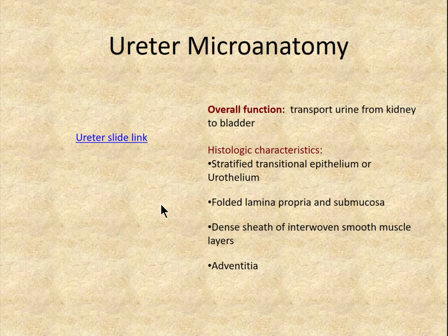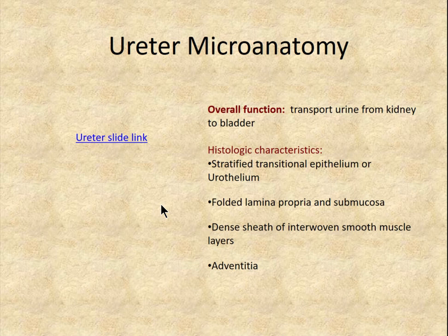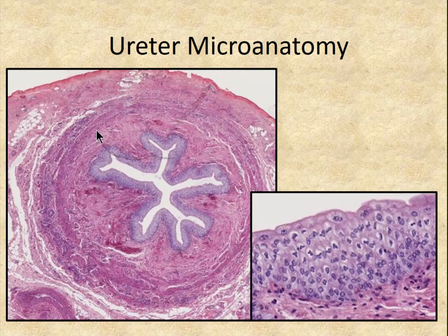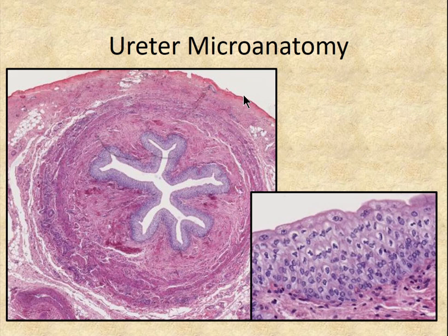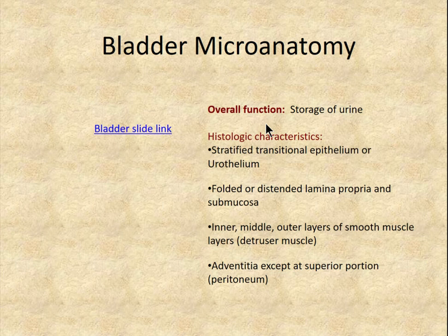The ureter has a delicate nerve and blood supply that can be disrupted in surgery. It transports urine from the kidney to the bladder via peristaltic movements from smooth muscle in the wall. Histologically it shows transitional epithelium, a folded lamina propria, smooth muscle layers, and an adventitia of loose connective tissue with collagen.